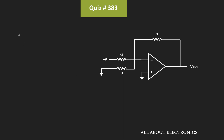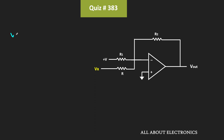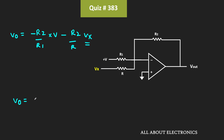In this condition the output vo2 is equal to minus R2 divided by R1 times V. So the overall output voltage is vo1 plus vo2, which gives minus R2 divided by R1 times V minus R2 divided by R times Vx. Now substituting the value of Vx, we can write Vout is equal to minus R2 divided by R1 times V.